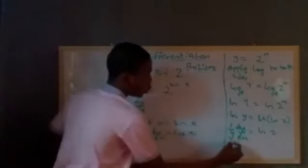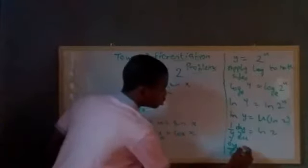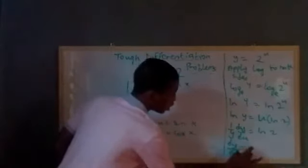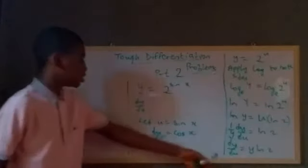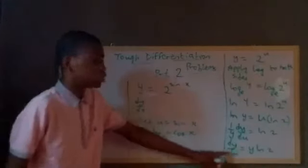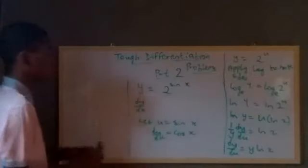So dy/du is what we are looking for. So dy/du is going to be equal to y ln 2. So what do we have? This is it here. And so we say dy/du is equal to y ln 2. We move over here to solve it.